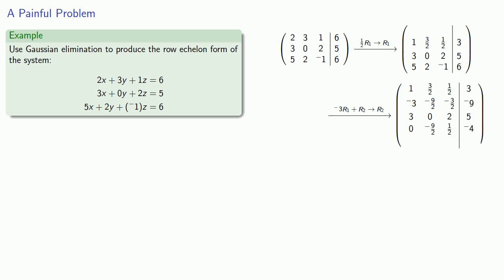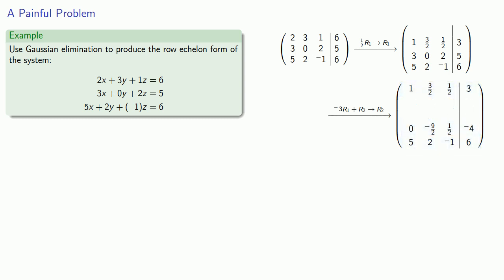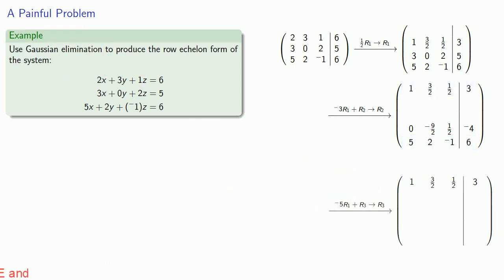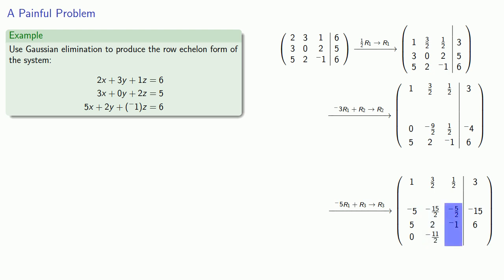We can record this as -3r1 + r2 replaces r2. We keep the original first row, the new second row, and the original third row. Now we'll eliminate the leading entry in the third row. Multiplying the first row by -5 and adding it to the last row: -5 × 1 = -5, -5 × 3/2 = -15/2, -5 × 1/2 = -5/2, and -5 × 3 = -15. Copying down the original third row, we add: -5 + 5 = 0, -15/2 + 2 = -11/2.